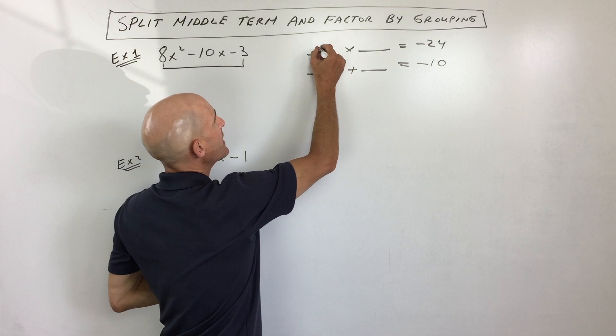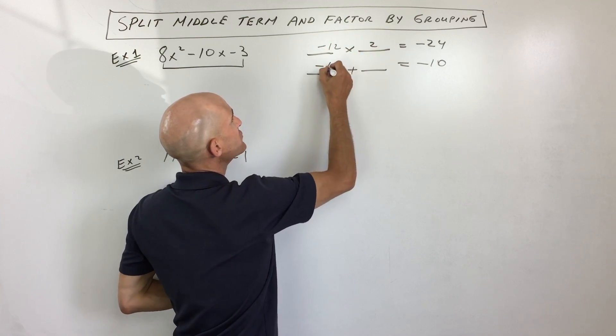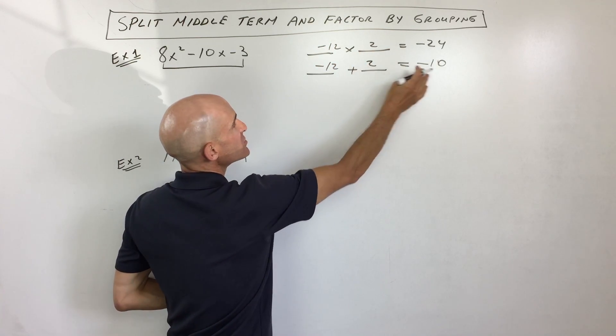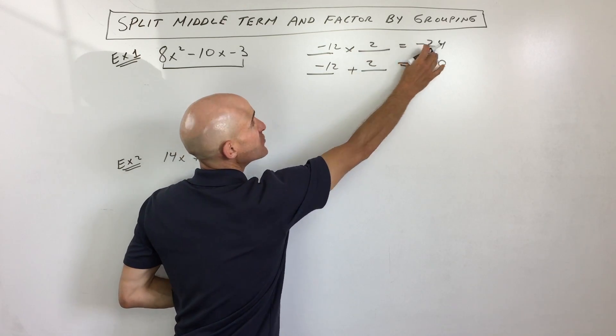So what two numbers do that? Well, it looks like negative 12 and positive 2. Negative 12 plus 2 is negative 10. Negative 12 times positive 2 is negative 24.